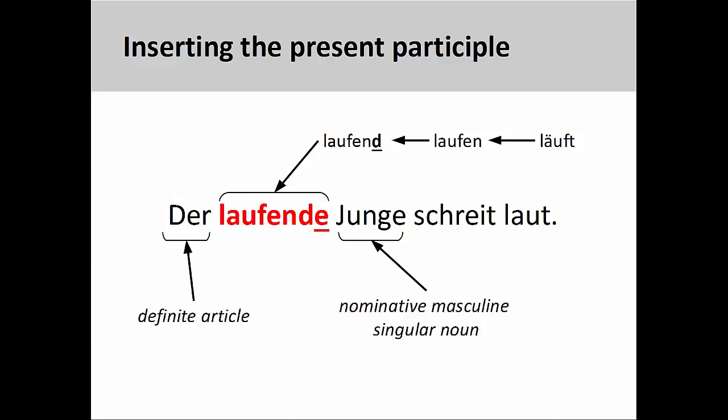When we insert the participle before the noun, it functions as an attributive adjective and needs an adjective ending. You will recall from your study of adjective endings that all adjectives following a definite article will be weak. Since der is a definite article signaling a masculine noun in the nominative case, we need to add -e as a weak adjective ending. You may want to review adjective endings if you are having difficulties with this step.